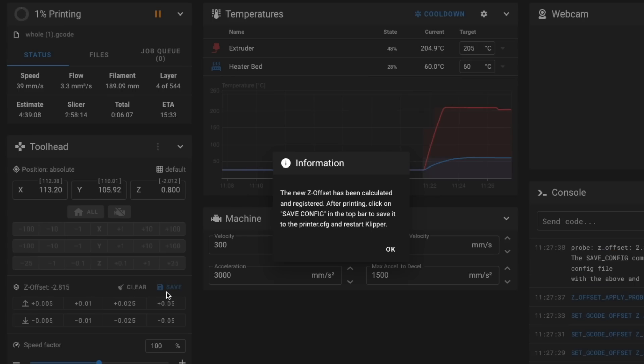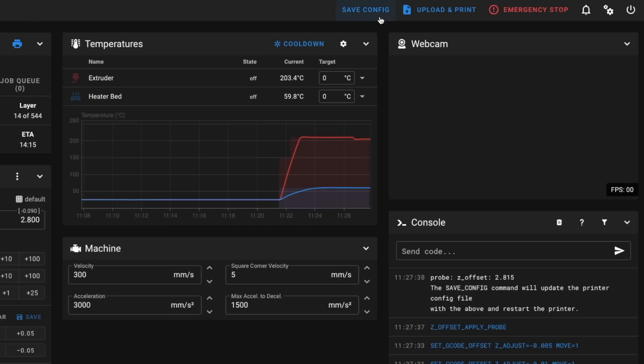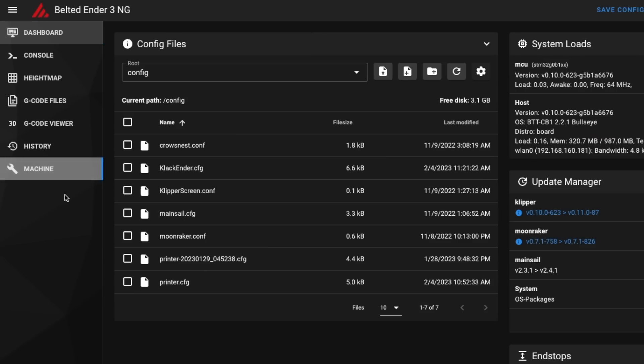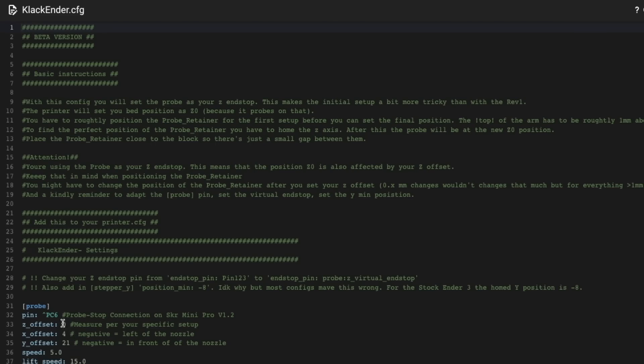When you're printing and you adjust your Z offset, if you afterwards go and try to save that to your firmware, you will get an error which is because that file or that probe section is not inside of your printer.cfg. It's in the clackender.cfg file. For this, all you have to do is take your Z offset value, go over to the clackender.cfg and enter it into the Z offset section under the probe. And that's really it.